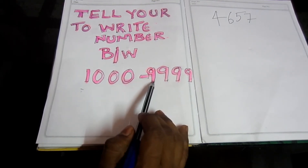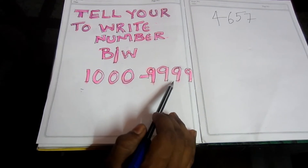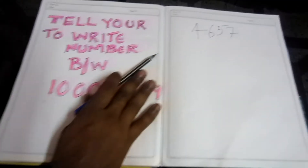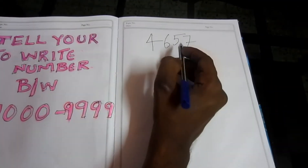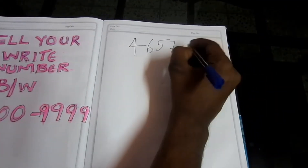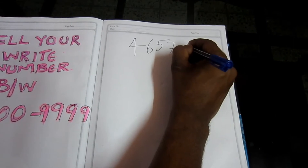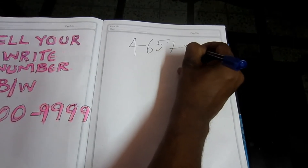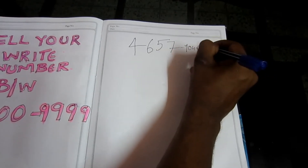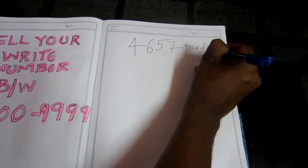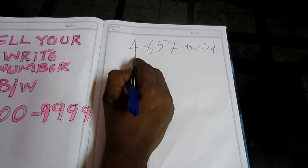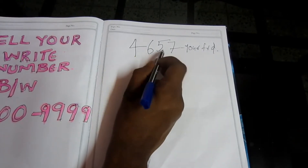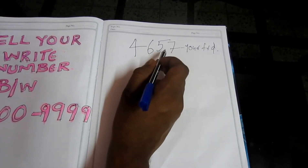That is a number with four digits — 9, 9, 9, 9 is the maximum. Now we have the friend write the number. The friend's number is 4657.